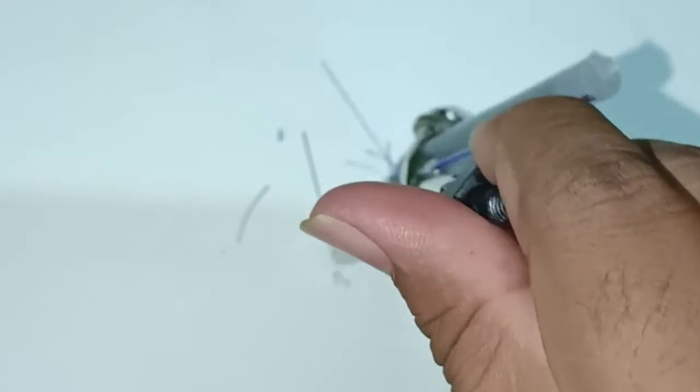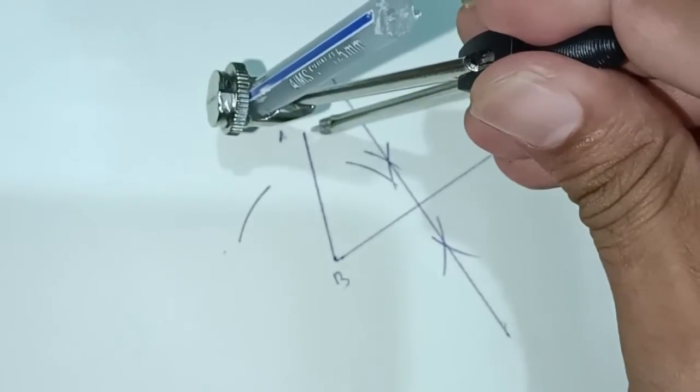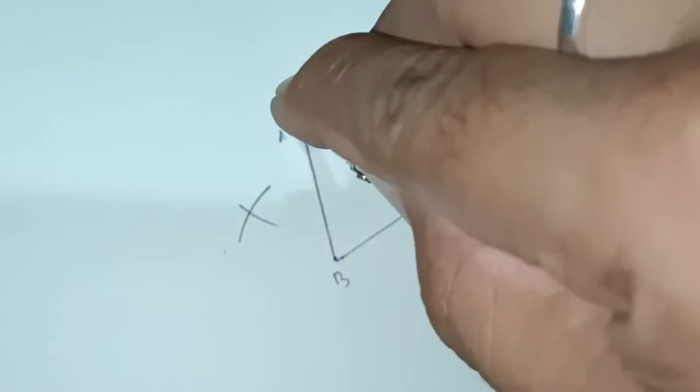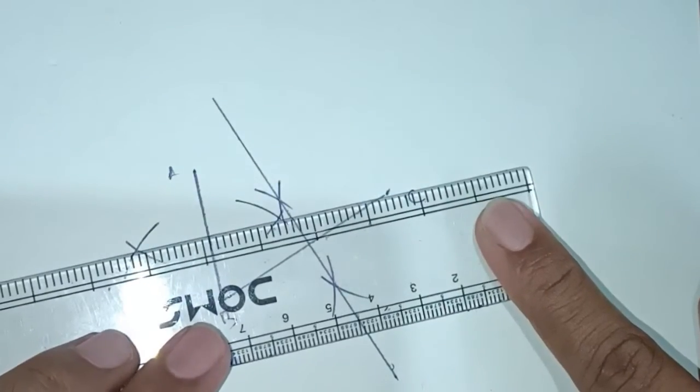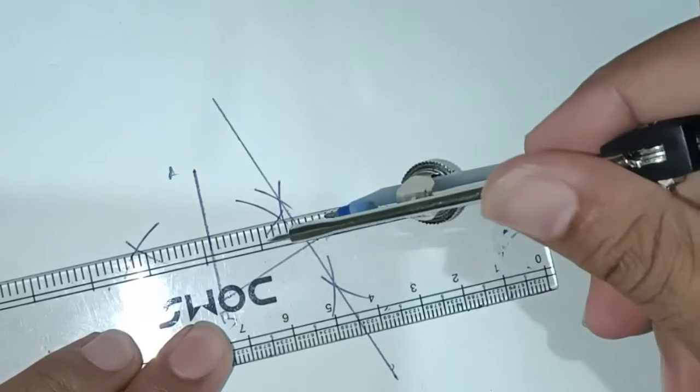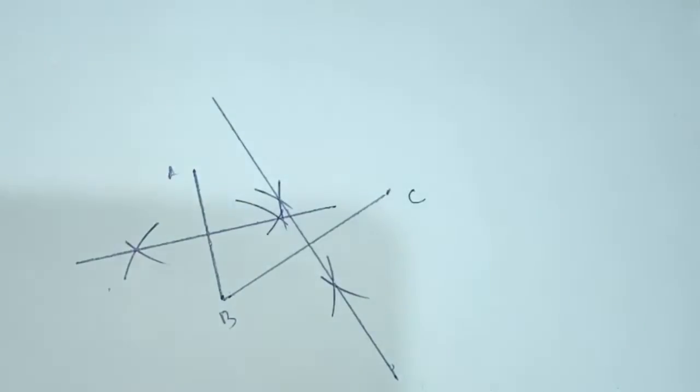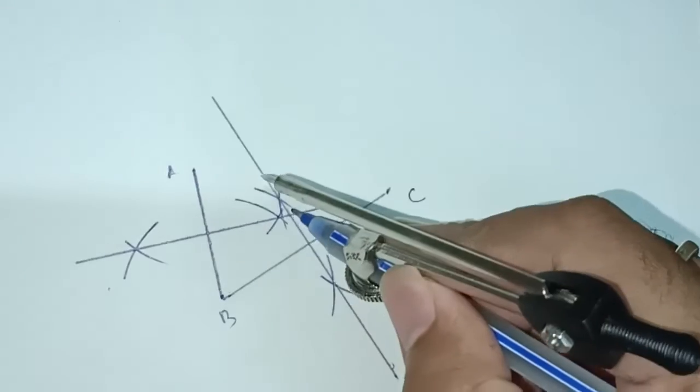Here we have the intersecting point. You can see there is an intersecting point of these two perpendicular bisectors.